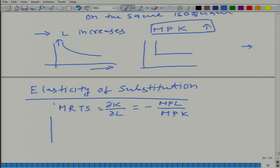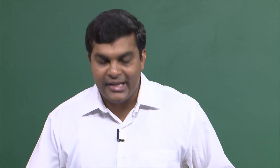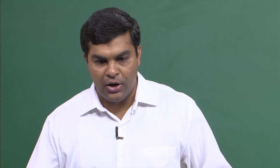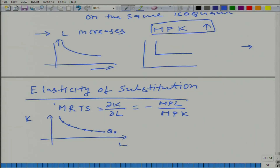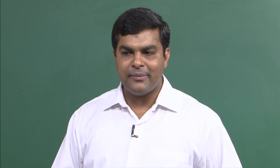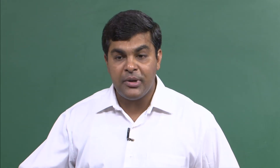Look at this isoquant. To produce Q-naught amount of output, all these combinations of inputs are efficient in the sense that we would not be wasting any input to produce Q-naught. But it does not mean that we can pick any one of these — these are technically feasible. We are talking about a technical constraint, but how about the economic motive?